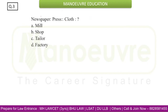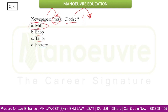The next question follows the same pattern: Newspaper is to Press, so Cloth is to what? The relation is: 'Newspaper is printed in Press.' So Cloth will be made where — mill, shop, tailor, or factory? Cloth is always made in a mill. So Option A, Mill, is the answer.